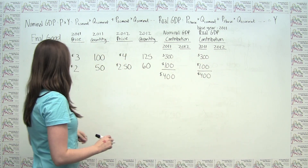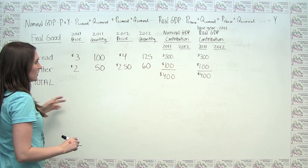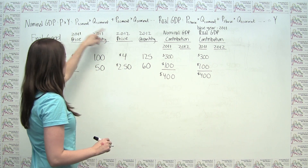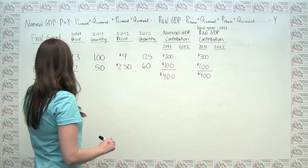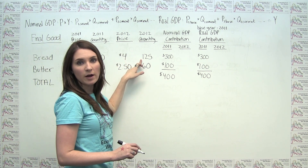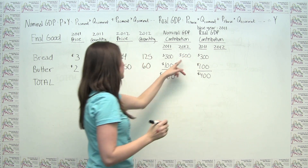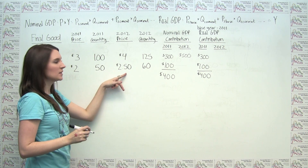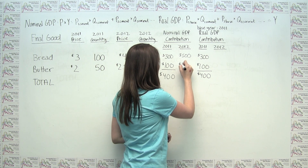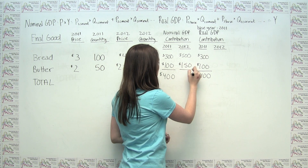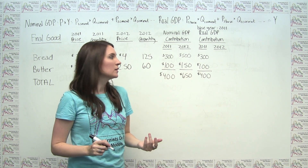Let's think about 2012. For 2012, nominal GDP was just taking 2012 prices, or current prices, and multiplying by current quantities. For bread, we had $4 times 125, which gave us a $500 contribution to GDP. For butter, we had $2.50 times 60 units, which gave us a $150 contribution, for a total of $650 in nominal GDP.